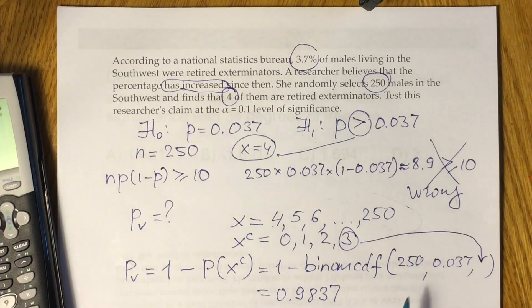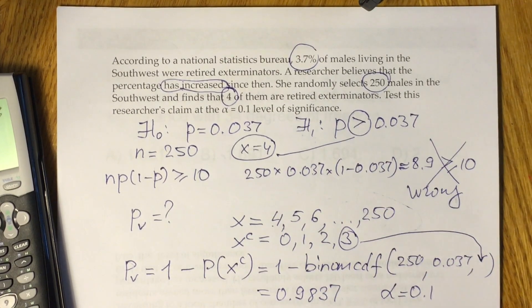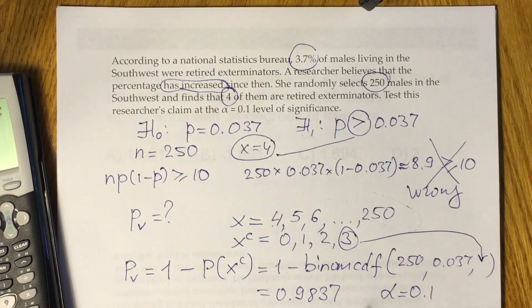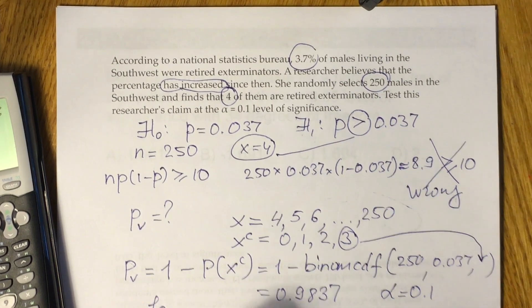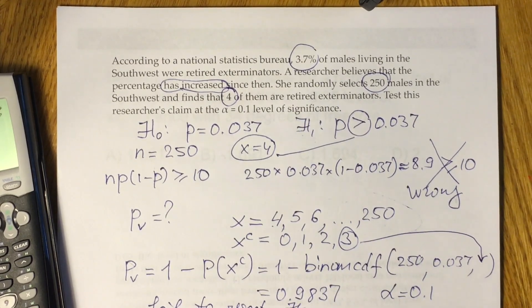This is our p-value. You have to compare this p-value with alpha given to you, 0.1. Clearly, our p-value is greater than alpha, so the conclusion is fail to reject null hypothesis.